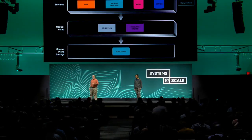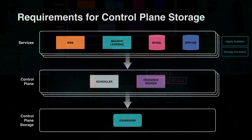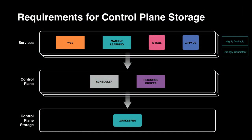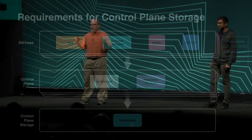Of course, it has to be highly available. If our control plane storage is down, the control plane is down, and all those services up top are going to have a bad time. It has to be highly consistent — if we allocate two resource-intensive jobs to the same machine, none of those jobs is going to perform well. Control plane services sometimes need a very rich API: the ability to execute complex queries over thousands or millions of rows of data, with complex predicates, secondary indices, and some form of query planning.